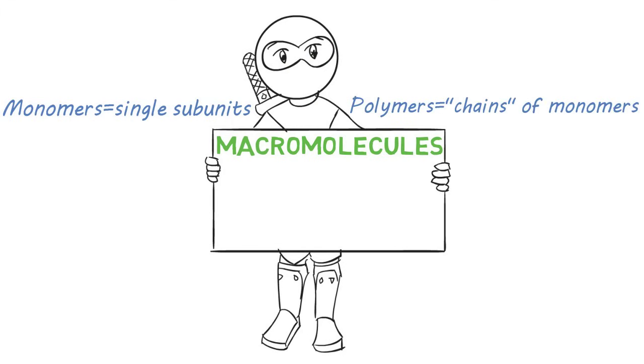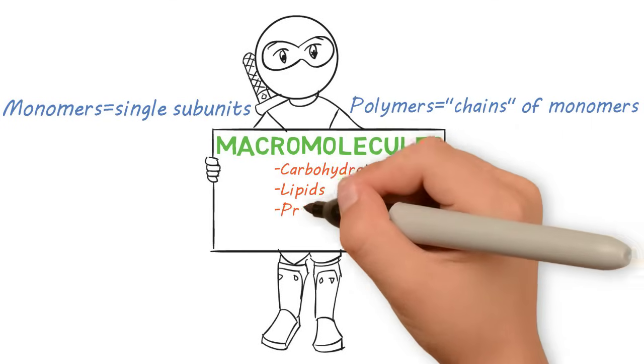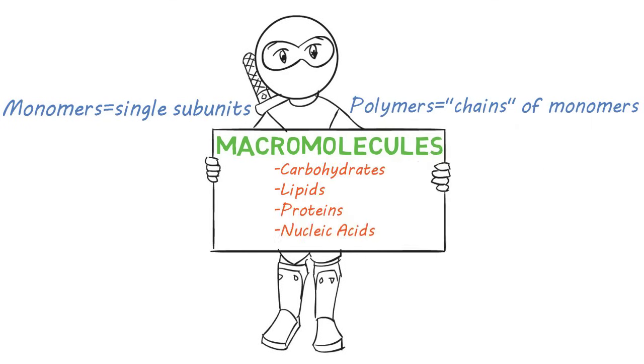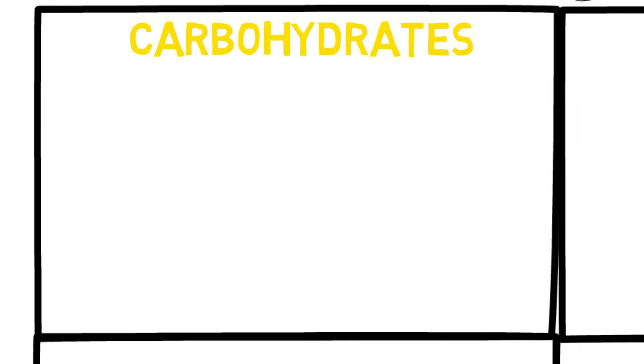There are four classes of macromolecules: carbohydrates, lipids, proteins, and nucleic acids. I'll talk about each of these in turn, starting with carbohydrates.